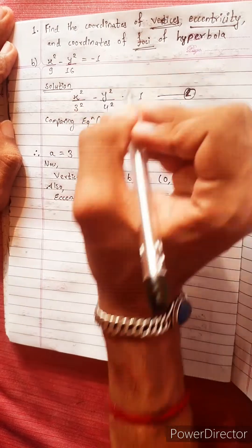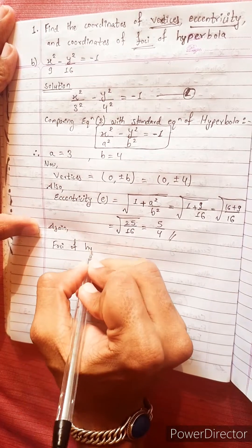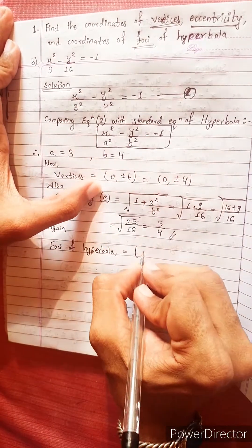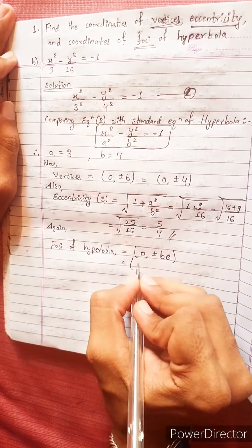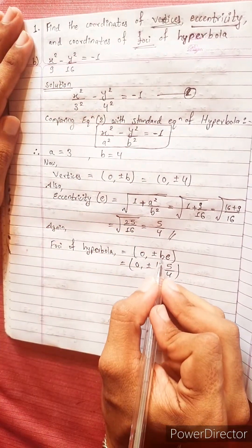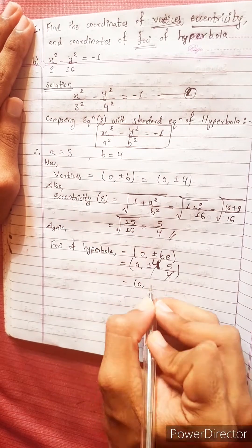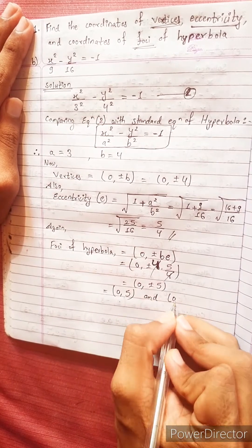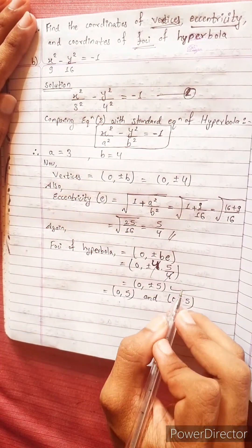Foci of hyperbola equals (0, plus minus be). b equals 4, so (0, plus minus 4 times 5 by 4). 4 cancels, equals (0, plus minus 5). So foci are at (0, 5) and (0, minus 5).